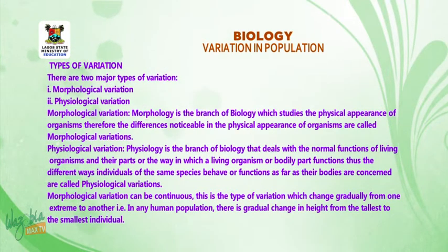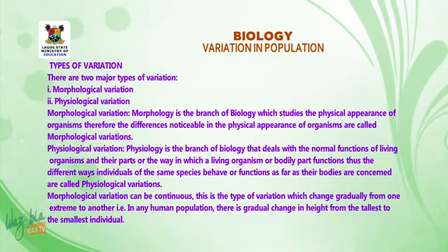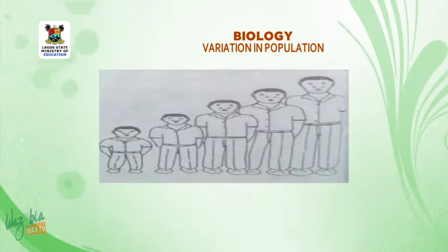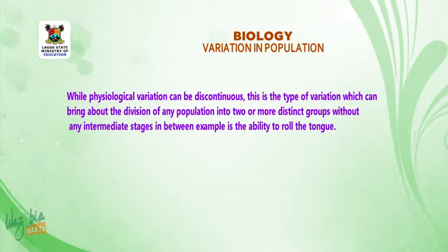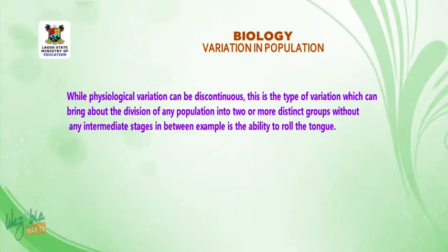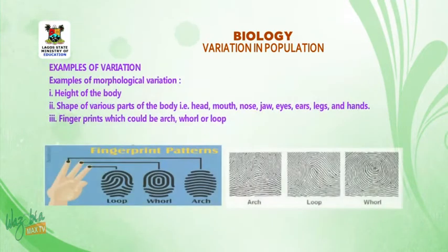Morphological variation can be continuous. This is the type of variation which changes gradually from one extreme to another. That is, in any human population, there is a gradual change in height from the tallest to the smallest individual. While physiological variation can be discontinuous. This is the type of variation which can bring about the division of any population into two or more distinct groups without any intermediate stages in between. An example is the ability to roll the tongue.